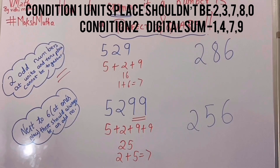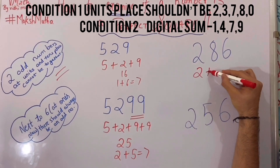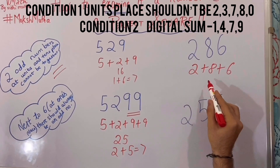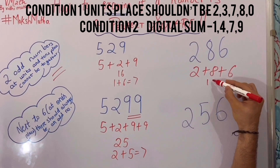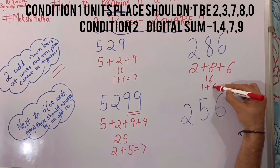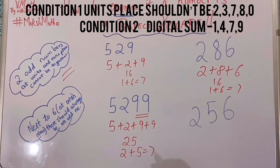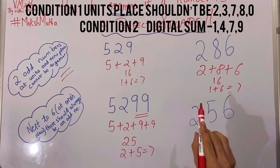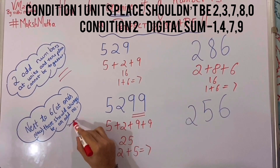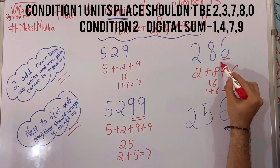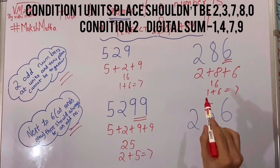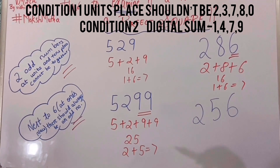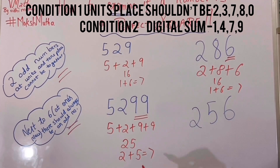Now 286. The digital sum: 2 plus 8 plus 6. 2 plus 8 is 10, 10 plus 6 is 16, and again 1 plus 6 is 7. Even in this case the digital sum is 7, but note that whenever 6 is at the unit's place, the number at the tens place should always be an odd number. Now we will see the next example: 256.